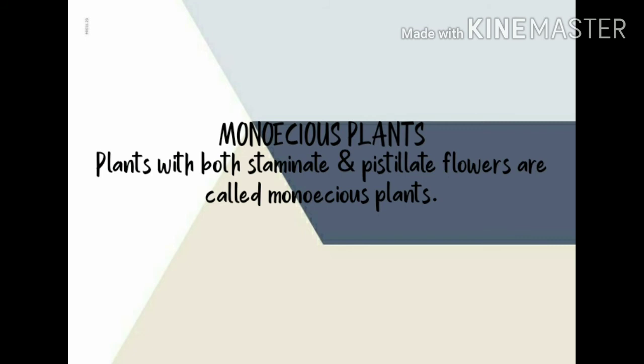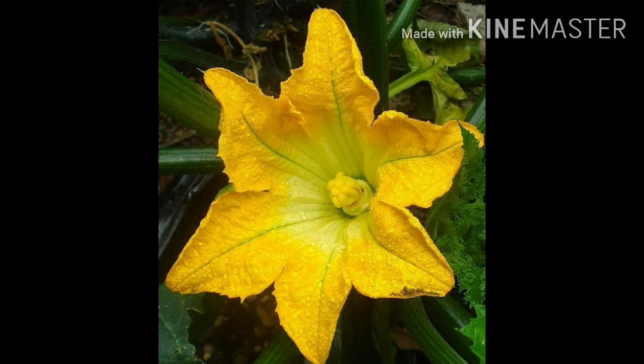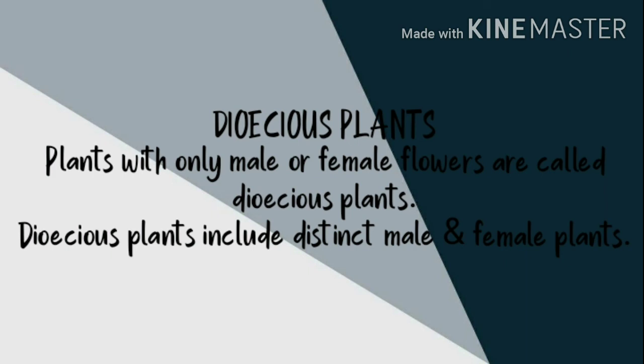The next type of plants are monoecious plants. Monoecious plants have both staminate as well as pistillate flowers in themselves. Staminate and pistillate flowers are male and female flowers respectively, so these plants possess both male and female flowers. An example is the Cucurbita family — the picture shown here is a Cucurbita flower.